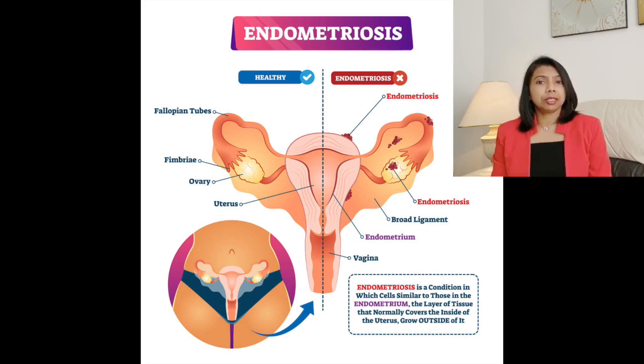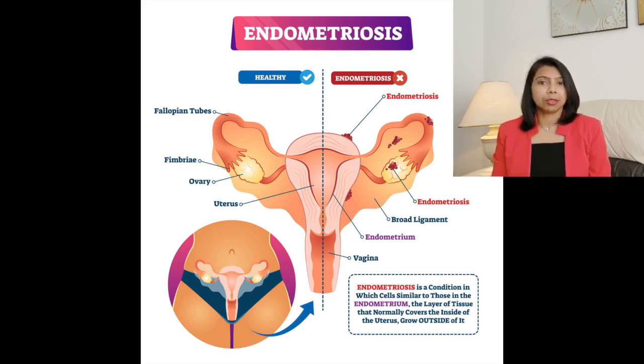Now when you have your period, the lining of the uterus sheds and it comes out as blood. But when these tissues bleed, the blood cannot come out. It remains trapped inside your body and it causes inflammation — meaning your body tries to fight off the endometriosis. That inflammation can cause pain. Over the course of time, scar tissues or adhesions develop, which stick all the organs together.